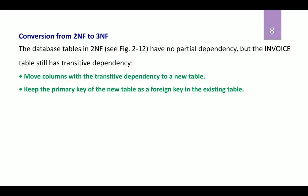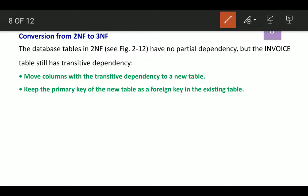To design a consistent database, we now need to convert to third normal form. The conditions for third normal form are that the table must be in second normal form and there should be no transitive dependencies. Since the table still has transitive dependencies, we move columns with transitive dependencies to a new table, keeping the primary key of the new table as a foreign key in the existing table.